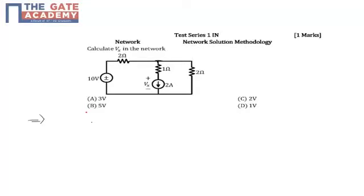Hello friends. This question is from test series 1 — one more question in the chapter on network solution methodology. In the question, we have a network which contains a 10-volt battery along with a resistive network of three resistors: 2 ohm, 1 ohm, and 2 ohm. In the branch of the 1-ohm resistor, we have a current source of 2 ampere.